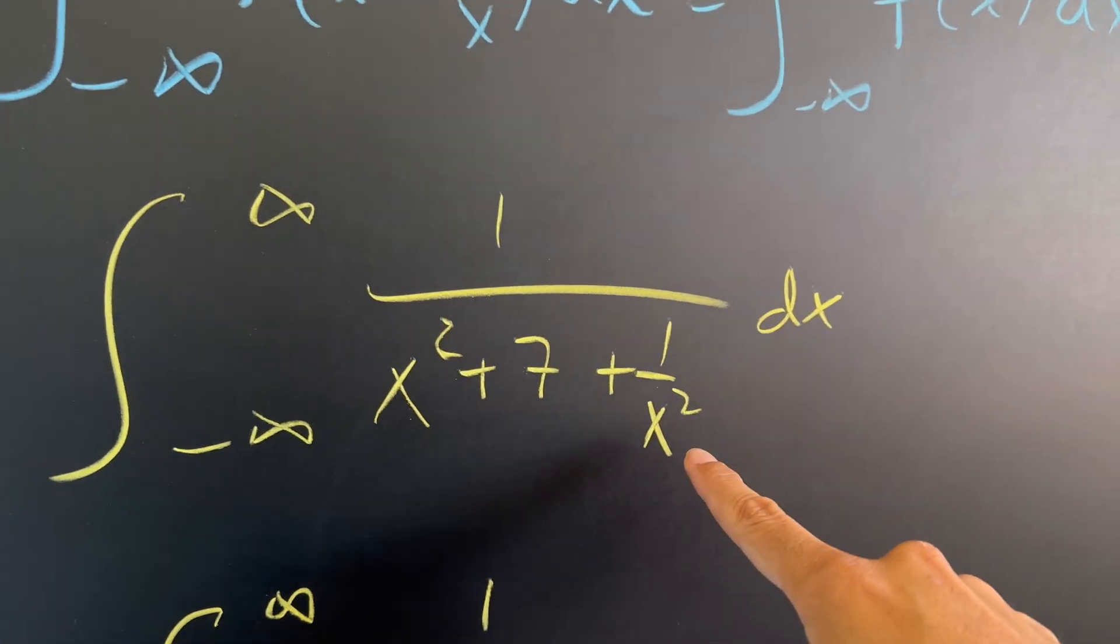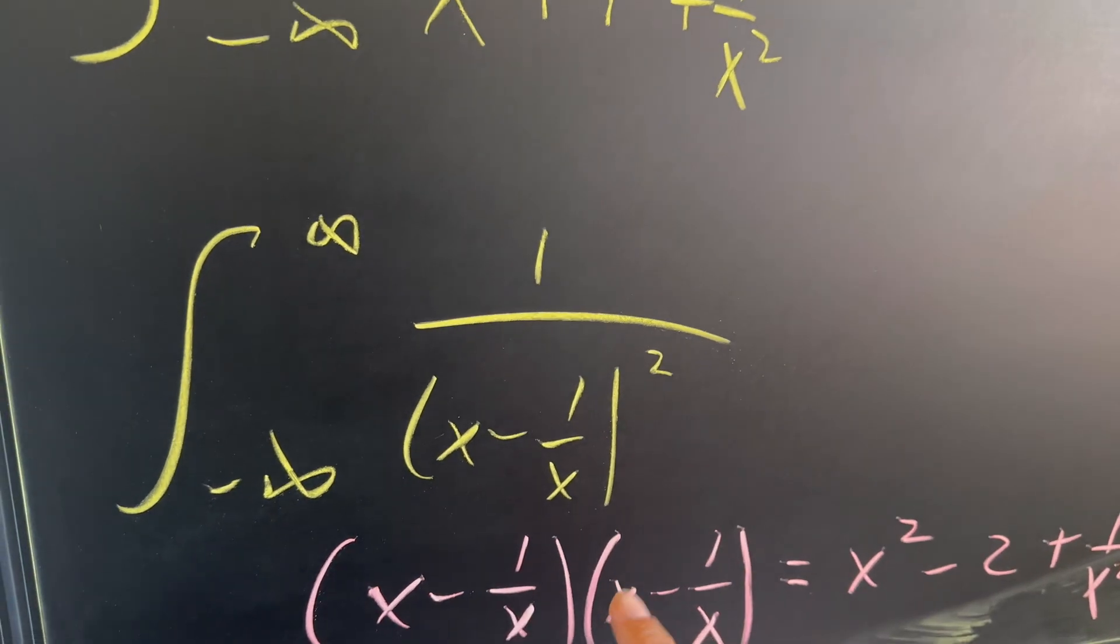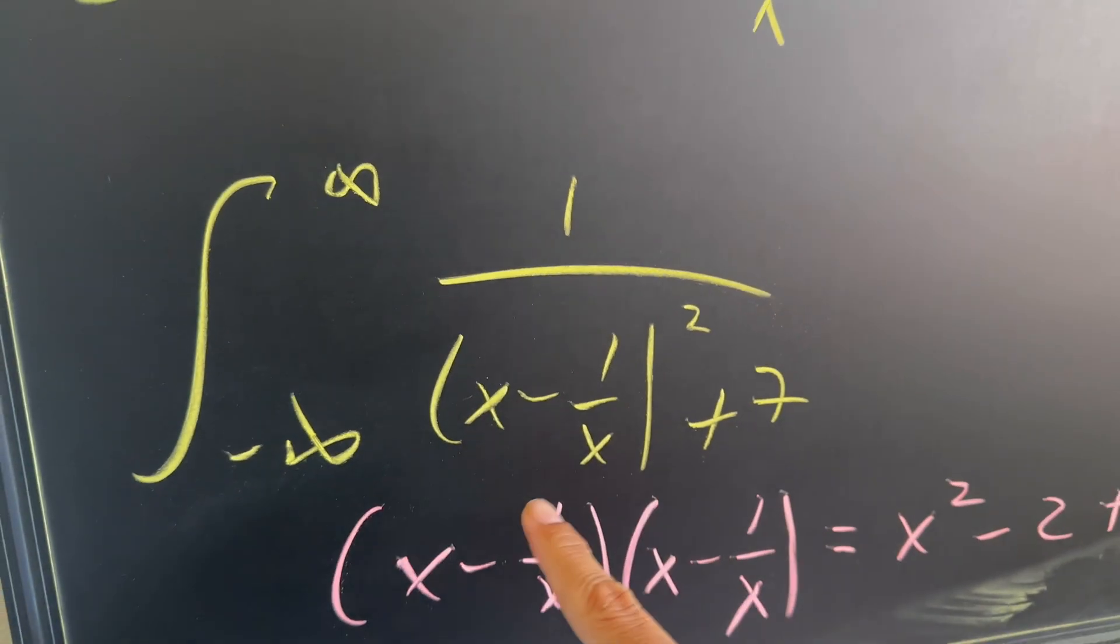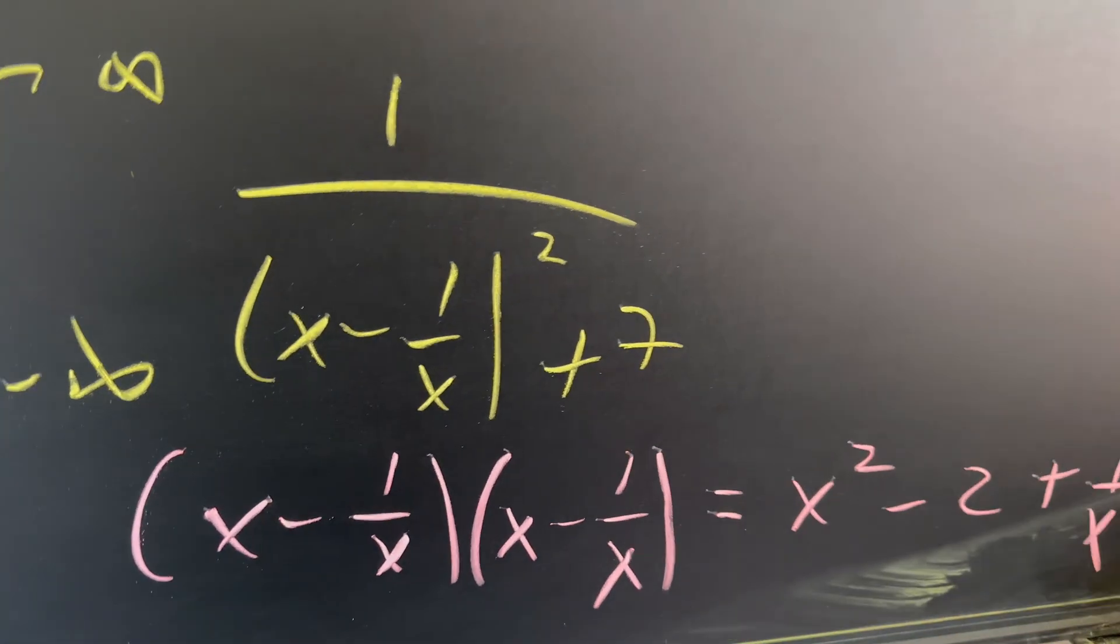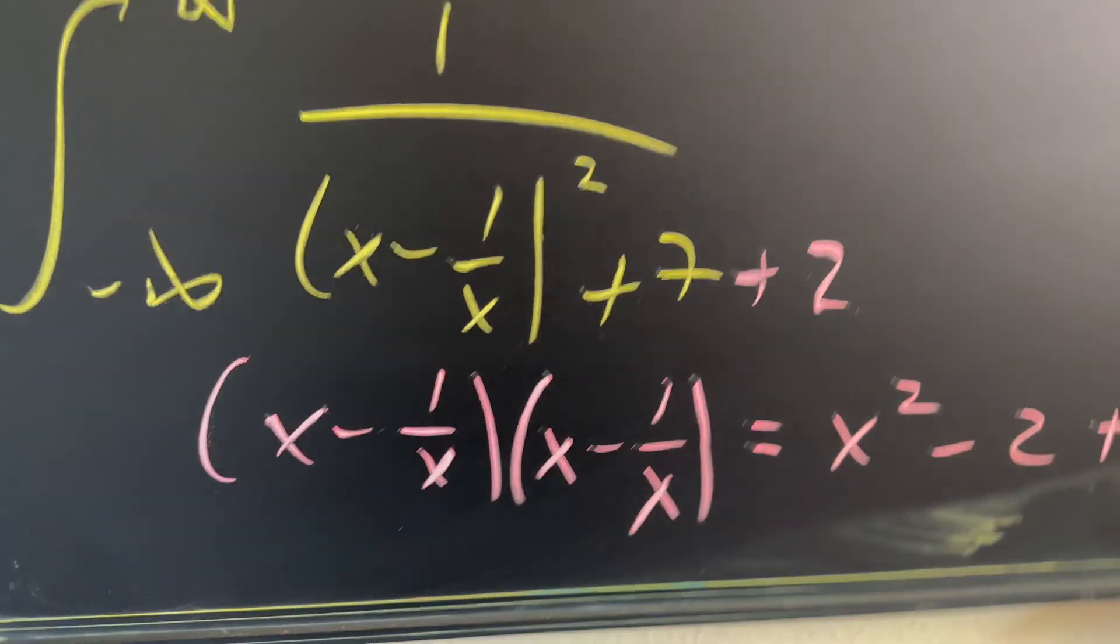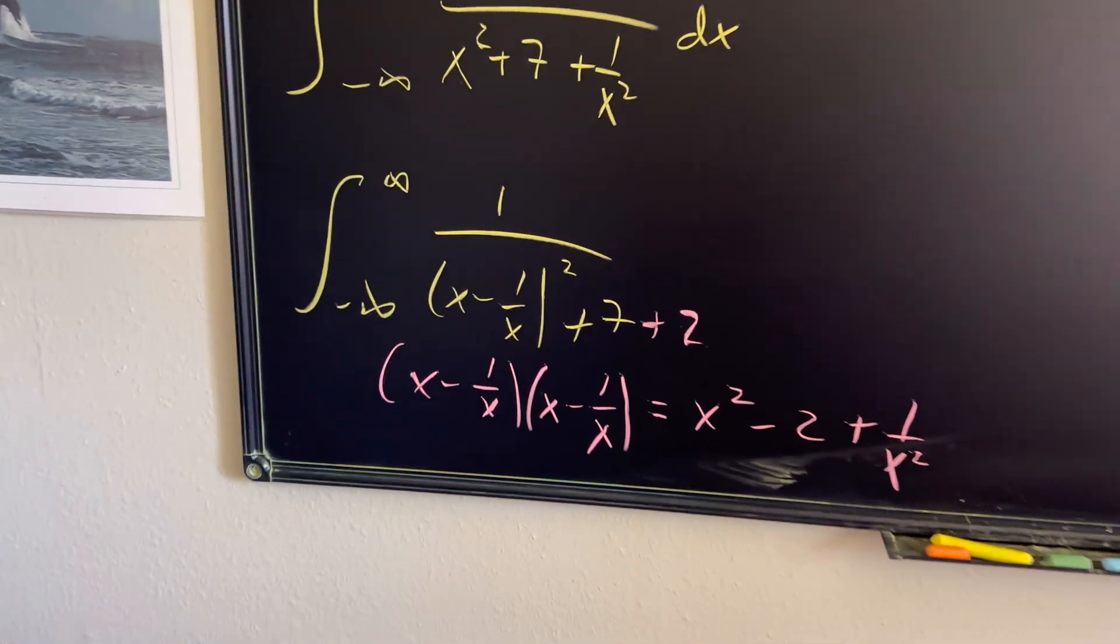That's what I have here. x squared, one over x squared. So I need to account for that. I still have the plus seven. But then technically, when I multiply these out, I have a negative two. So I have to make sure that I also add a two on here. Hopefully that makes sense.